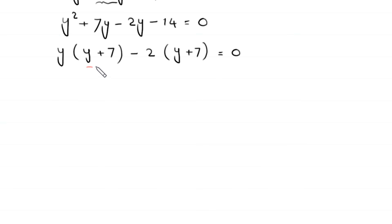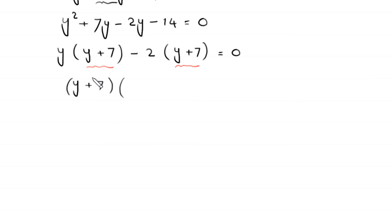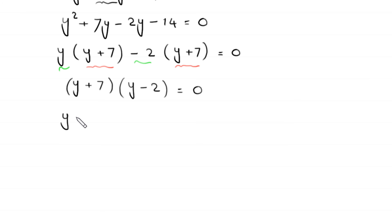The expression y plus 7 is a common factor. Factoring it out gives y plus 7 times y minus 2 equals 0. From here, either y plus 7 equals 0, giving y equals negative 7, or y minus 2 equals 0, giving y equals 2.